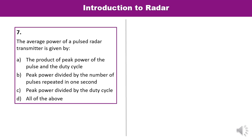Question 7: The average power of a pulsed radar transmitter — denoted P_average — how is it given? The duty cycle is the ratio of average power to peak power. So P_average is the product of peak power and duty cycle. A is the correct answer.